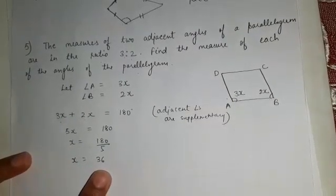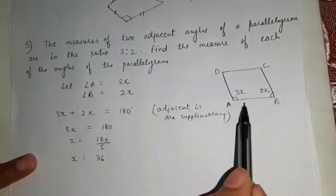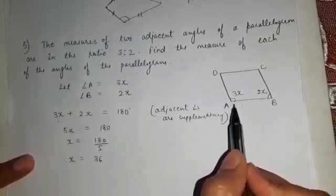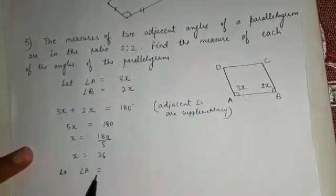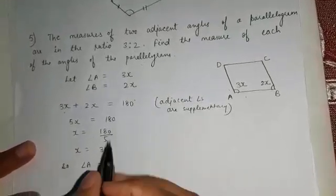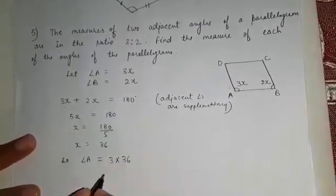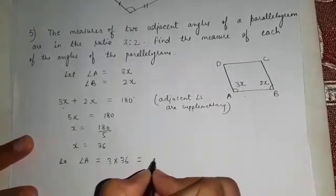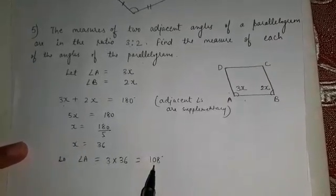The value of x is 36, but the question asks for the measure of all the angles of the parallelogram. So let us find the measurement of angle A first. Angle A is equal to 3x, that means 3 multiplied by 36, which is equal to 108. Angle A is 108 degrees.